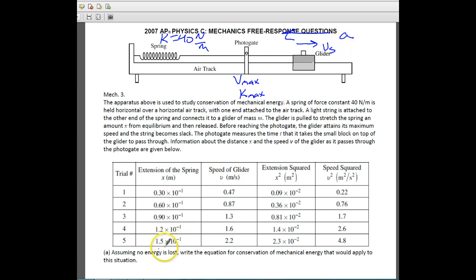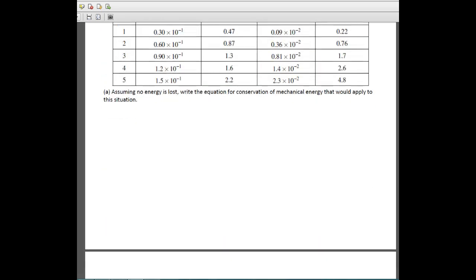So the first thing that they want us to do is assuming no energy is lost, so we know that this is a conservative force, write an equation for the conservation of mechanical energy. And when you do that, you want to just think about the two things that you have in the problem. At first we don't have any speed, so our kinetic energy is equal to zero. So don't worry about it. But we do have potential energy of the spring.